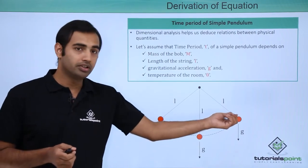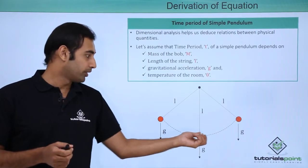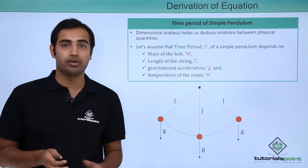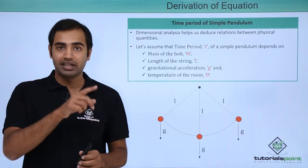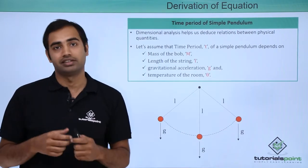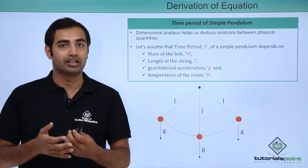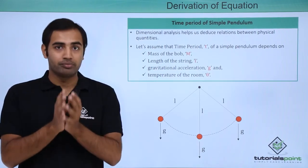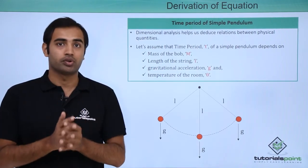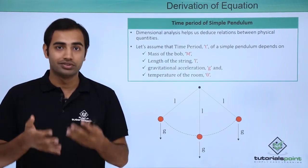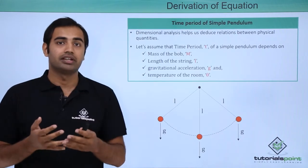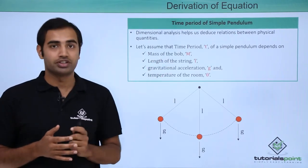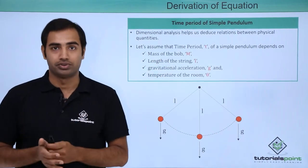So if I start from here, the pendulum goes all the way up to here and comes back at the same spot. The time taken in this entire cycle is called the time period of the pendulum. For the matters of this problem, we will assume that the time period depends on these four physical quantities as shown here.